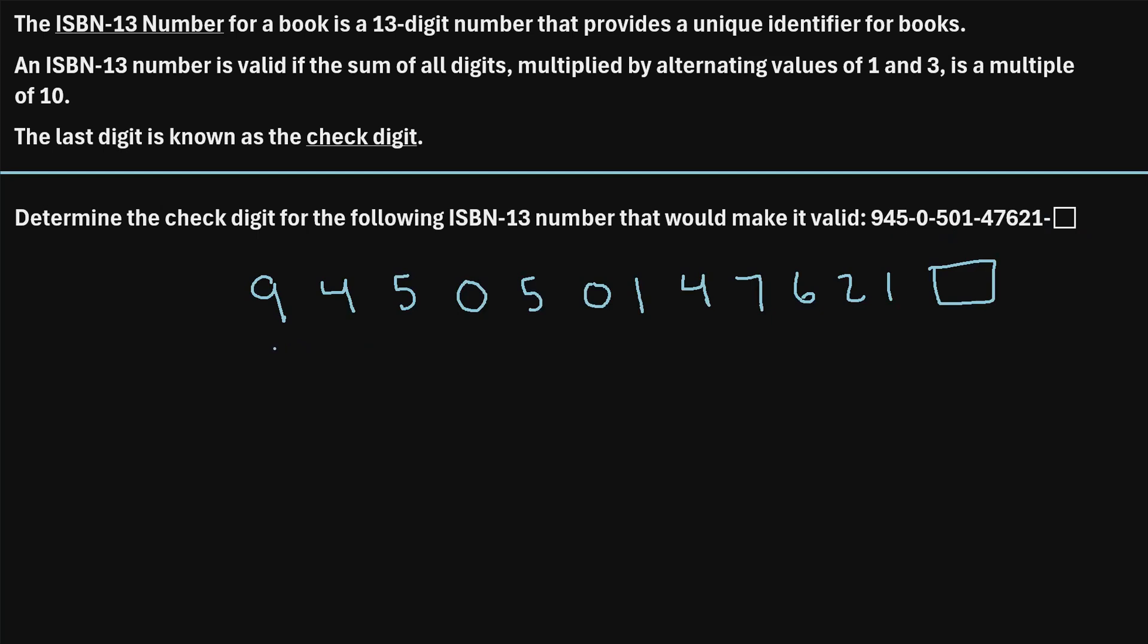So the first step that we need to do is multiply each of the values by alternating values of 1 and 3. So for example, this 9 right here, we're going to multiply it by a 1. The next number, this 4, we're going to multiply it by a 3. This 5, we multiply by a 1. The next number, we multiply by 3.